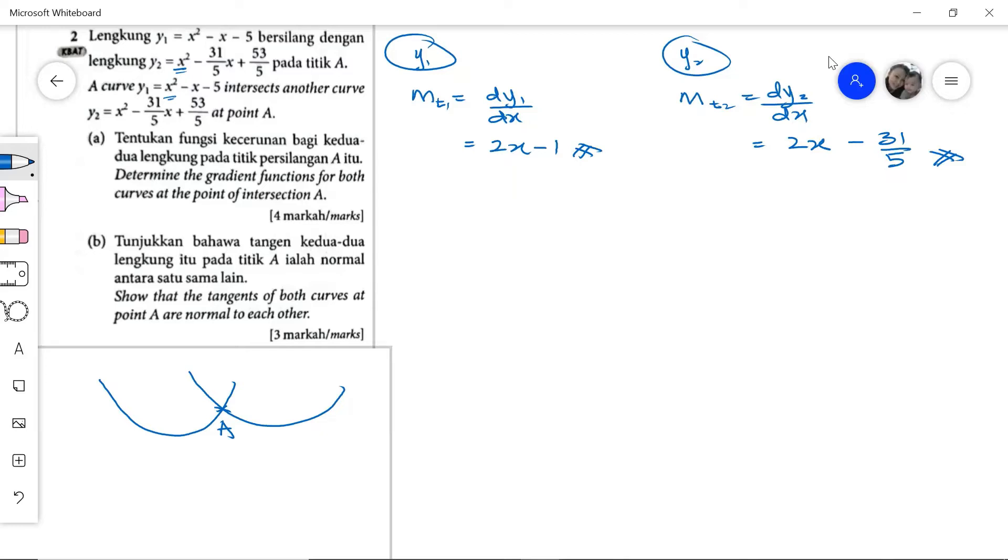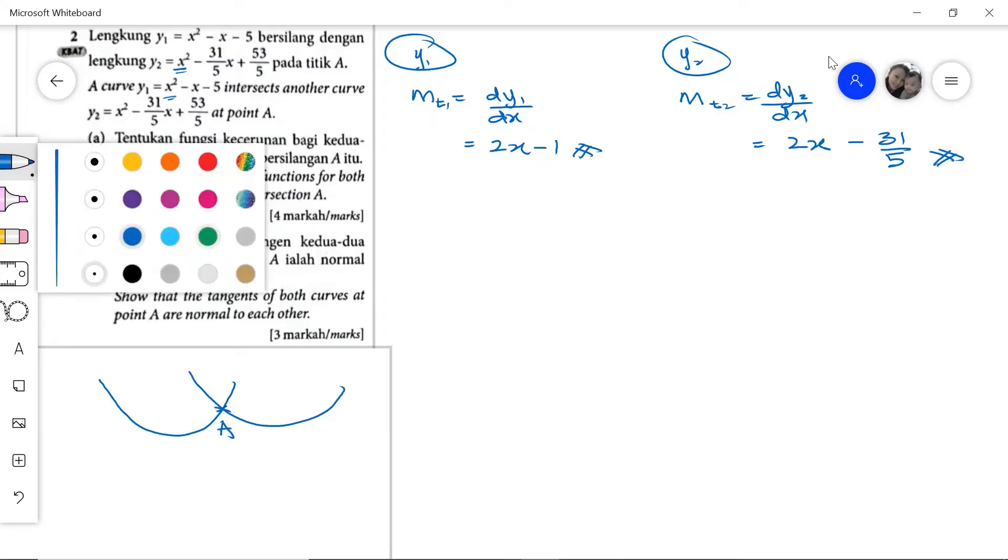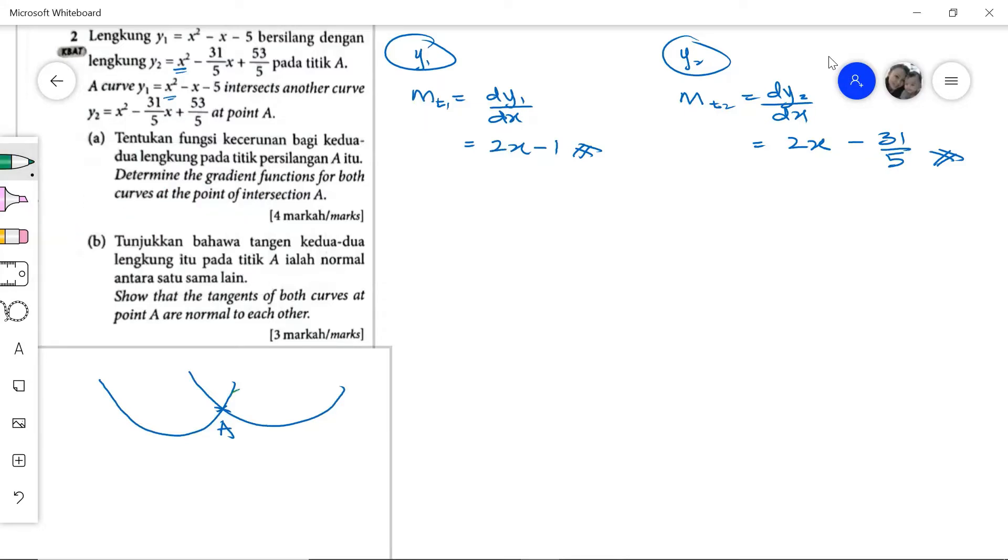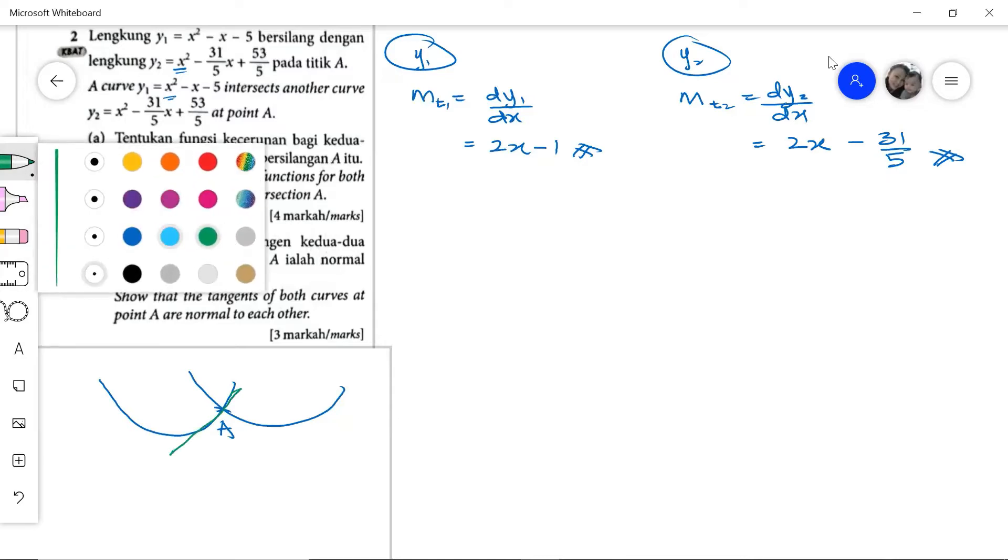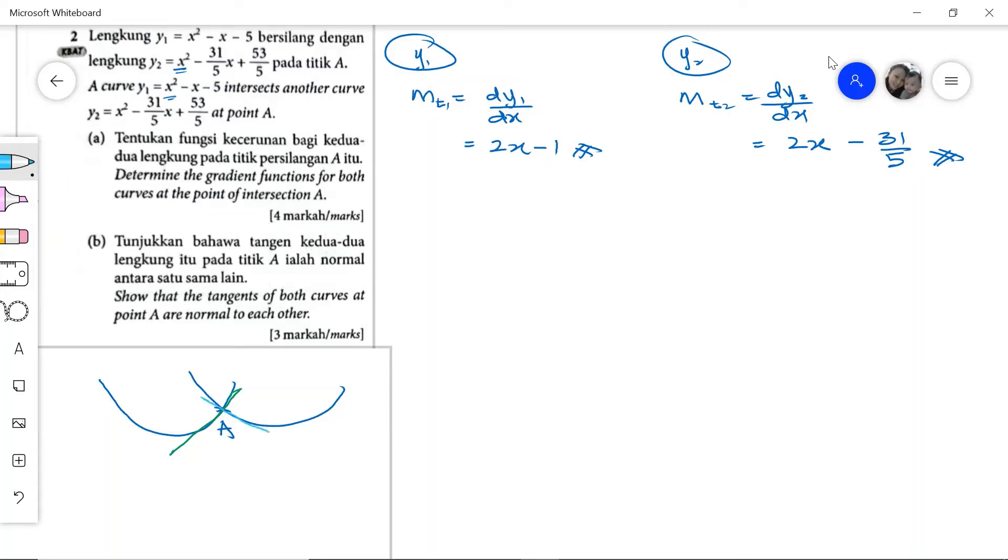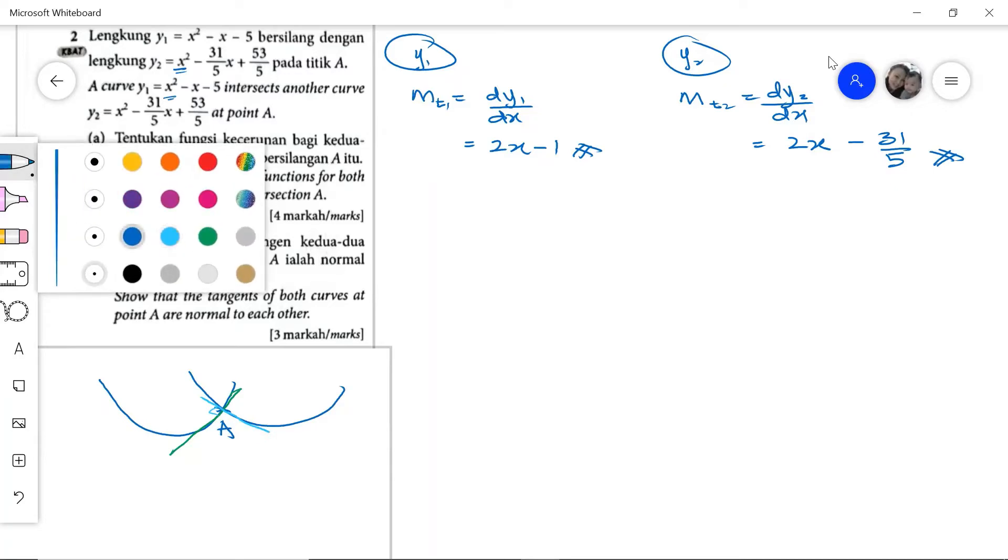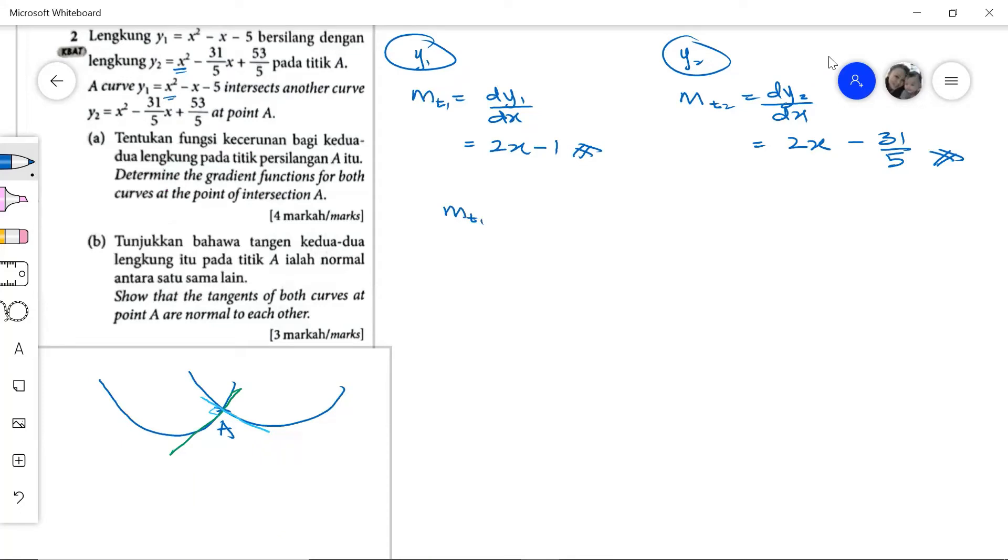Now part B, we have to show that the tangents of both curves at point A are normal to each other. Let me sketch - this will be one tangent, and then another tangent. We need to prove that these two tangents are normal to each other, meaning they make 90 degrees to each other, or in other words, they are perpendicular. When we identify the keyword perpendicular, we immediately link it with the nature of the gradient - m1 times m2 should equal negative 1.